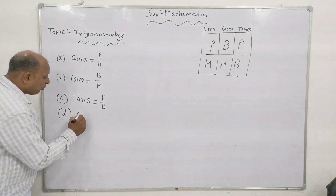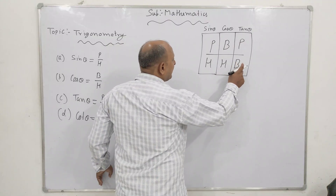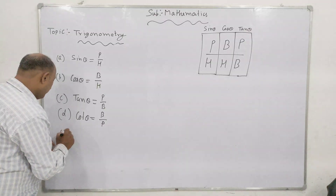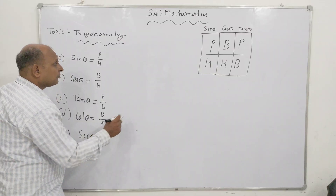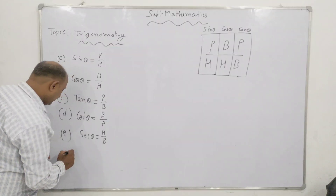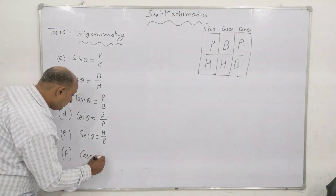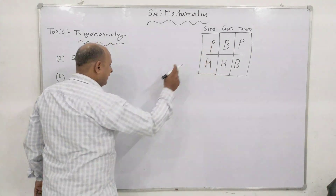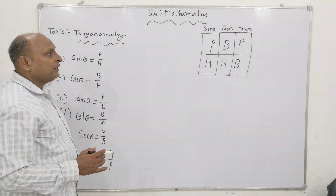Next, cot theta is base upon perpendicular. Then sec theta is hypotenuse upon base, H upon B. And cosec theta is hypotenuse upon perpendicular, H upon P.